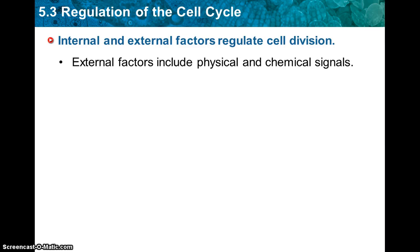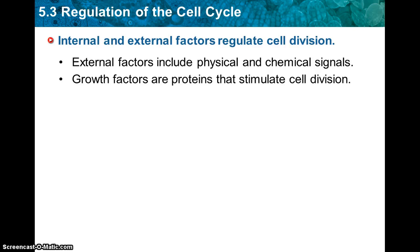Some external factors include physical and chemical signals. Cells will release chemical signals that tell other cells to grow. For example, we have growth factors, which are proteins that stimulate cell division. These growth factors bind to receptors and activate specific genes to trigger cell growth. In general, cells grow and divide in response to a combination of different growth factors — it's never just one, it might be a couple different growth factors.